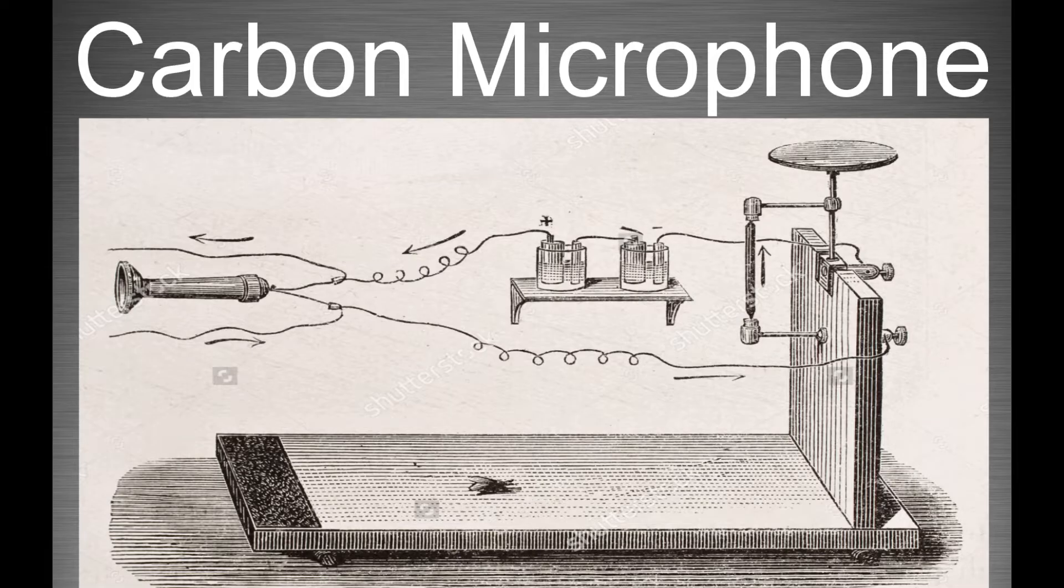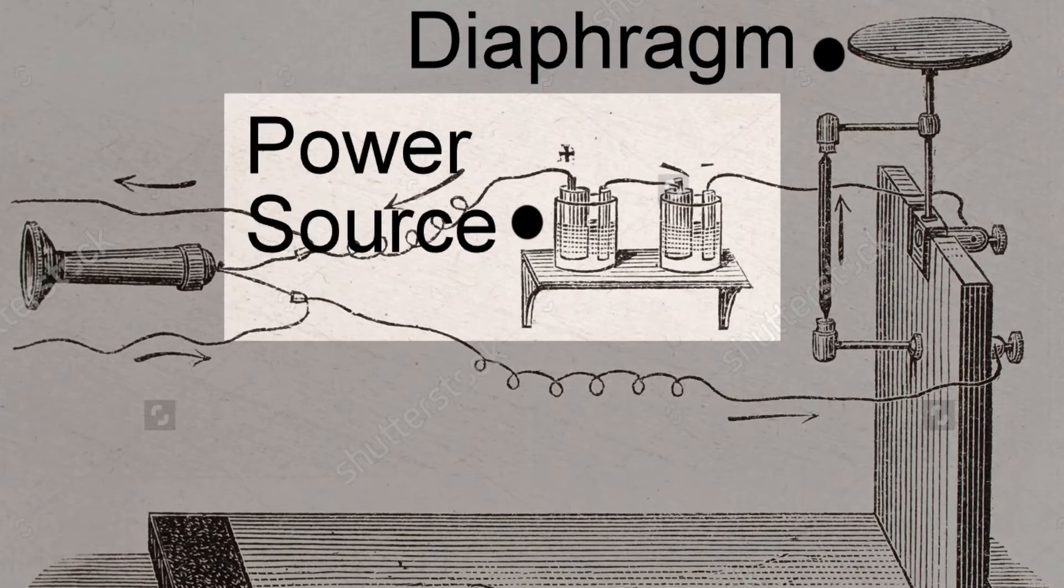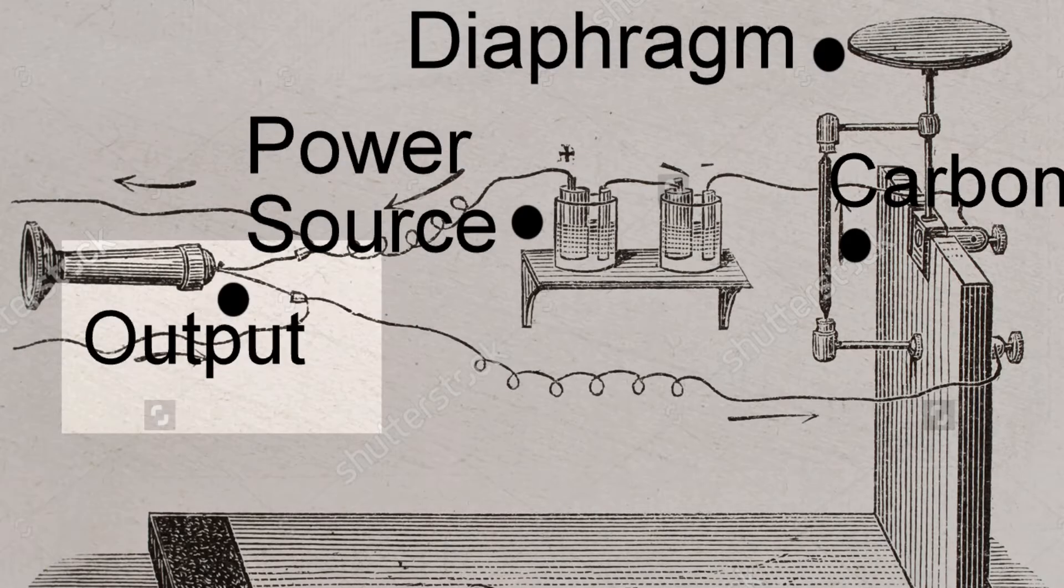So, how does it work? Carbon microphone. Carbon microphone has four main parts. The diaphragm, the power source, the carbon, and the output.